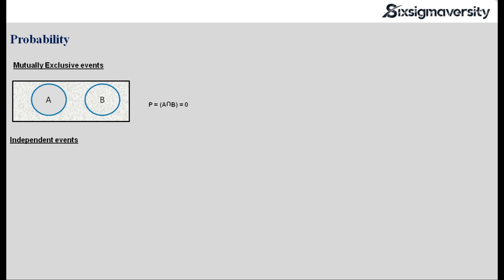Then we have independent events. Let me take the example of dice again. If I look at the probability of 1, the first time when I roll the dice it will be 1 by 6, and if I repeat the experiment I will still get the probability as 1 by 6, which means that these events are independent.